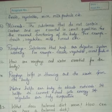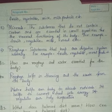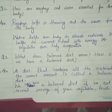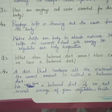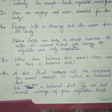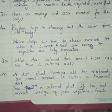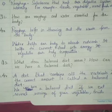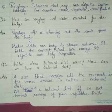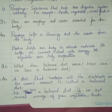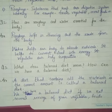Roughage — substances that keep our digestive system working. Examples: fruit, vegetables, cereal, food, etc. Question number two: How is roughage essential for the body? Roughage helps in throwing out the waste from the body. Water helps our body to absorb nutrients, helps to convert food into energy, and regulates our body temperature.